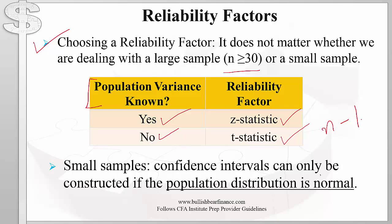There is one important thing to remember about small samples. We can only create confidence intervals if we can safely assume that the population distribution is normal. If the population distribution is not normal, we cannot create a confidence interval for small samples. This is different from the case for large samples, where it does not matter whether the population distribution is normal — we can still create confidence intervals.